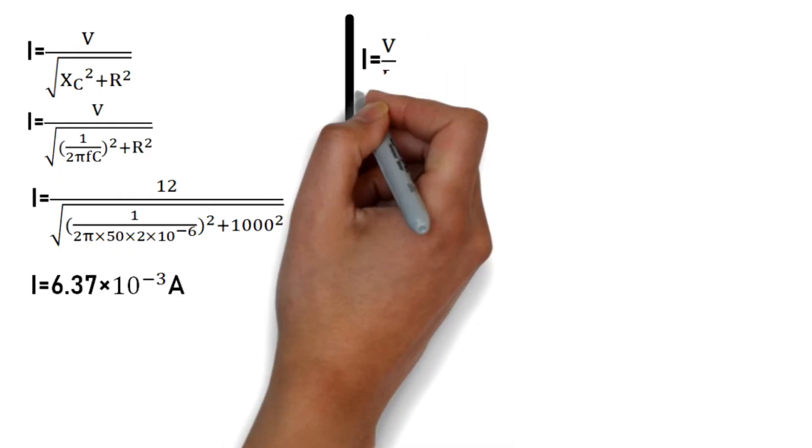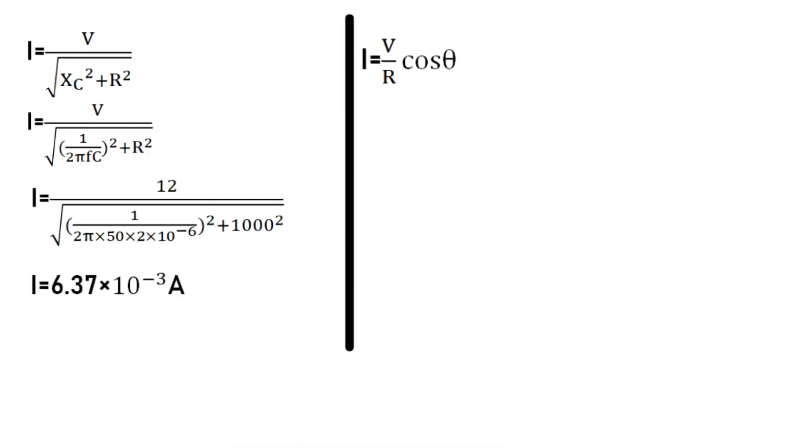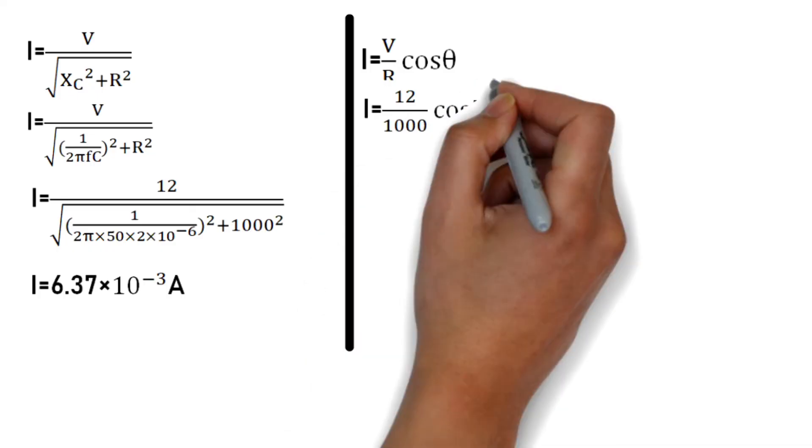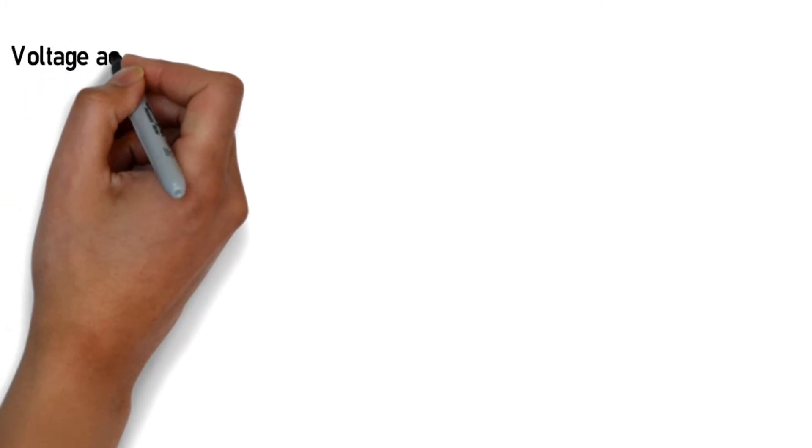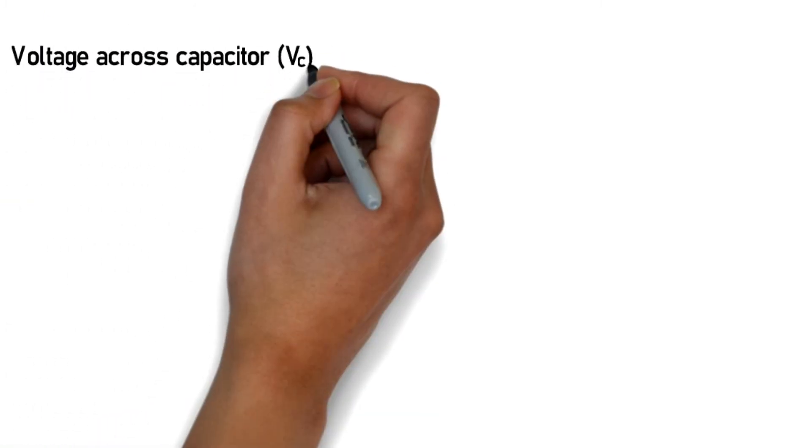Alternatively, using I = (V/R) cos θ where theta is the phase angle between current and voltage, substituting the values gives I = 6.37 × 10⁻³ ampere.